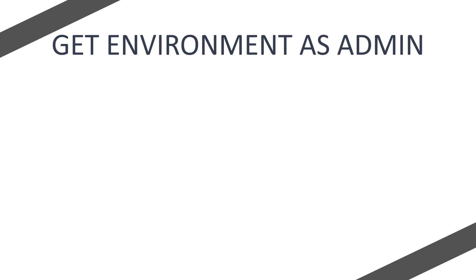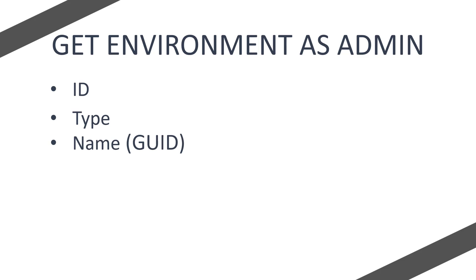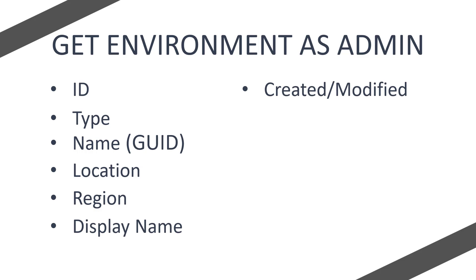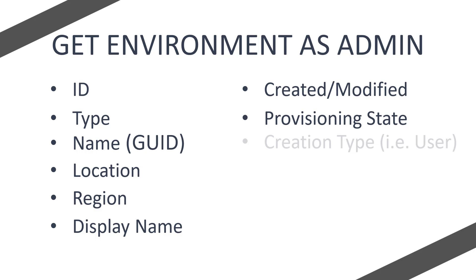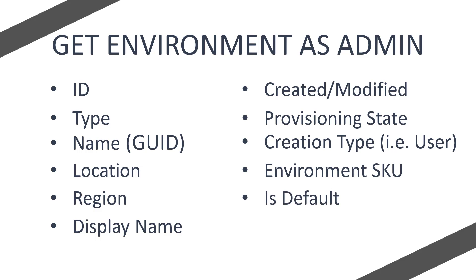The action we're going to be looking at is Get Environment as Admin. This action allows us to get the ID, the type, the name which would be the GUID, the location, the region, the display name, the created and modified, the provisioning state, the creation type such as a user creation, environmental SKU, whether it is a default environment, and more such as the URLs. So as you can see we can get all of the information we would actually want on an environment from this one action.